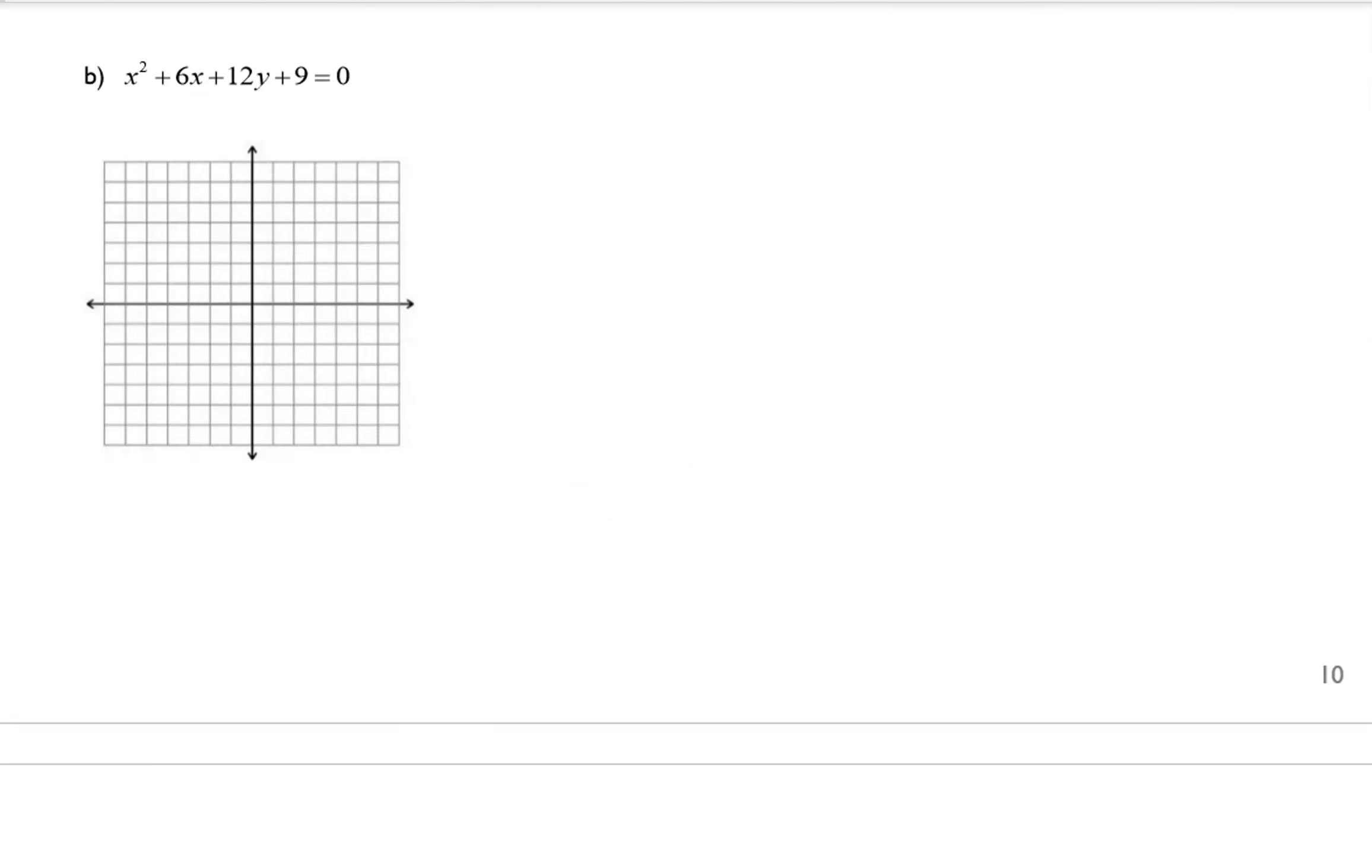All right, so example B wants us to graph the equation x² + 6x + 12y + 9 = 0. And this is not in standard form of any of the conic sections. So we actually have to do some manipulating of this equation. And I'm going to rewrite this as x² + 6x and then leave some space and close off my parentheses. Plus 12y + 9 = 0. Now, in order to get this into a form that we're going to recognize to figure out what conic section this is, we need to complete the square.